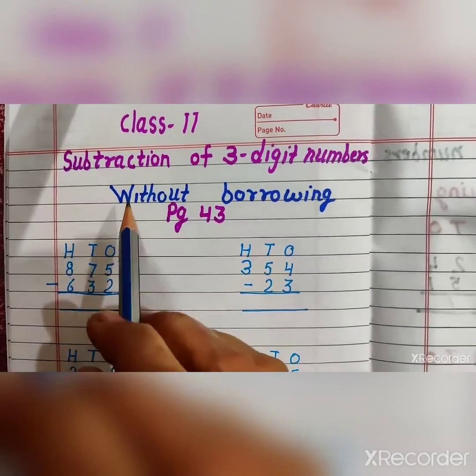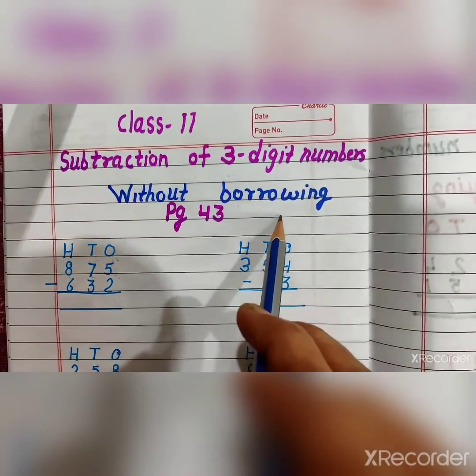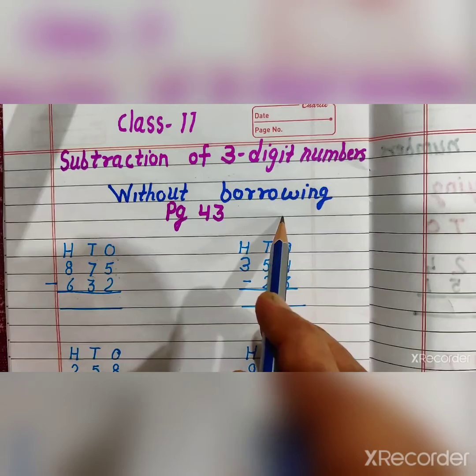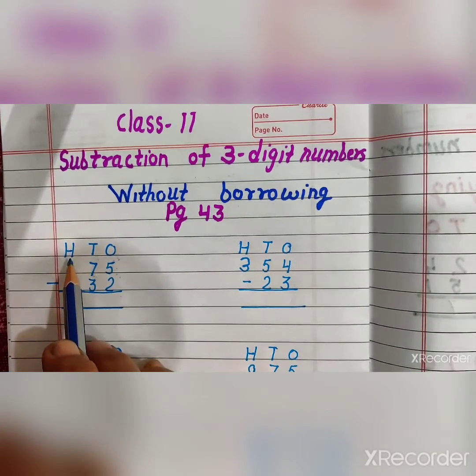Let's start subtraction of three-digit numbers without regrouping. First of all, we will write ones, tens and hundreds.